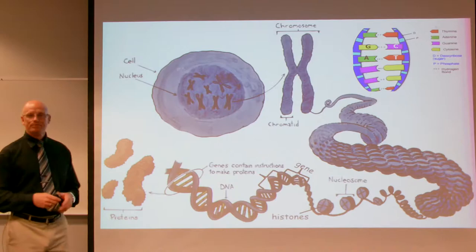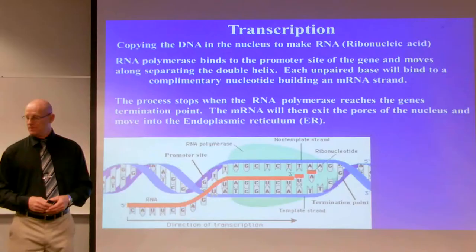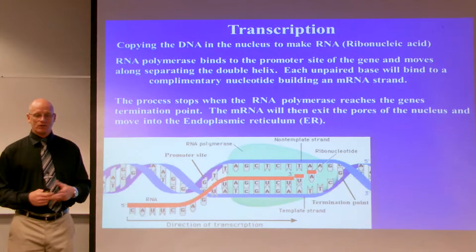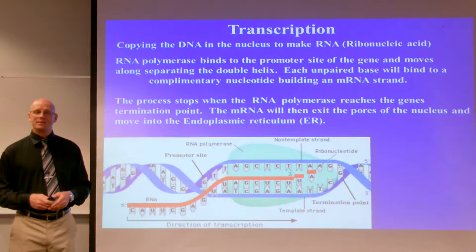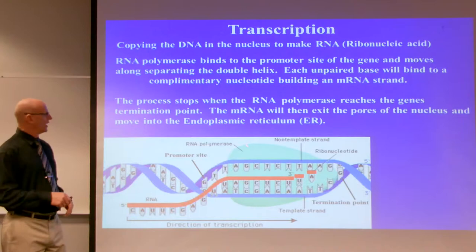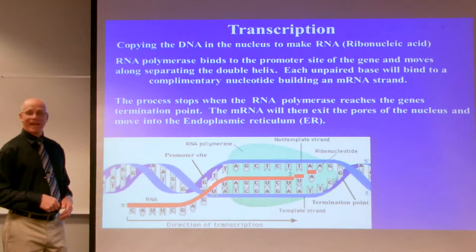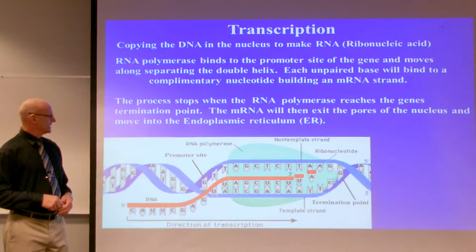That DNA codes for and makes proteins. Our body makes proteins through two processes: transcription and translation. In transcription, we copy the DNA — deoxyribonucleic acid — in the nucleus into an RNA strand, a ribonucleic acid, more specifically a messenger RNA. The RNA polymerase binds to a promoter site on the double-stranded DNA helix and starts to separate it — it unzips it.